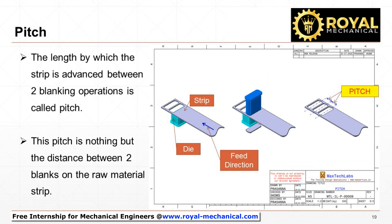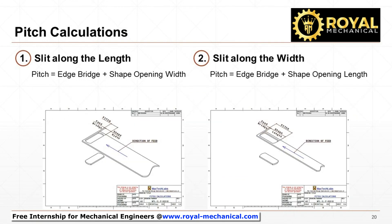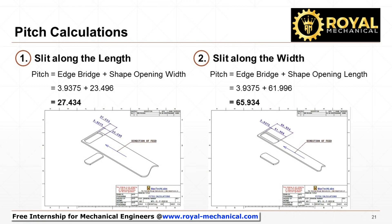This feed distance or feed length is called the pitch. In other words, the length by which the strip is advanced between two blanking operations is called pitch. This pitch is nothing but the distance between two blanks on the raw material strip. Pitch is equal to the edge bridge plus the shape opening length or width, depending on the component orientation. We can substitute the edge bridge values plus the shape opening length or width and calculate the pitch values. With this, we have successfully calculated the values of feed bridge and pitch dimensions.